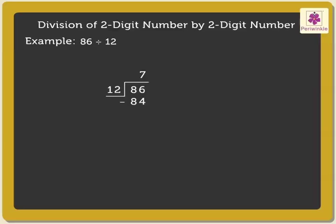Finally, subtract 84 from 86, which is equal to 2. Thus, here we get the quotient as 7 and the remainder as 2.